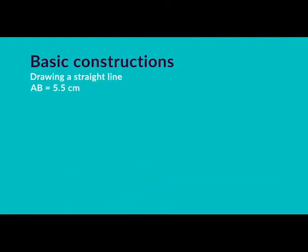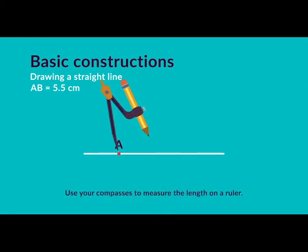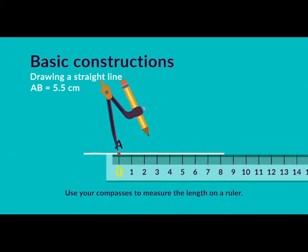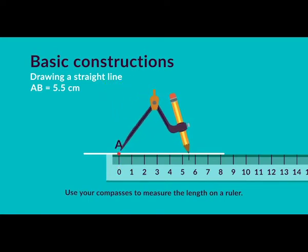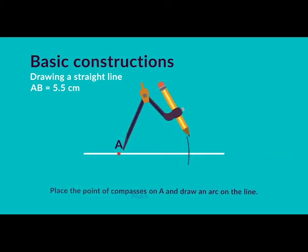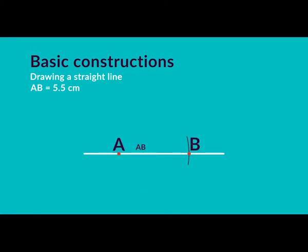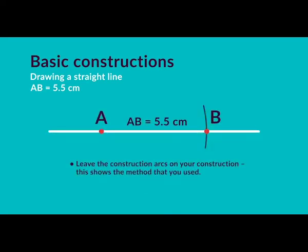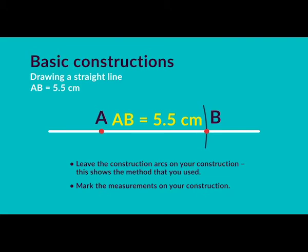Drawing a straight line of exactly 5.5cm. Draw a line of any length and mark your starting point, naming it A. Open the compasses to measure 5.5cm by placing the pointer on the zero mark of the ruler and the pencil point on the 5.5cm mark. Place the compass pointer on point A and draw an arc on the line. Mark the intersection point B. AB is the required line segment of 5.5cm. Be sure to leave the construction arcs and mark the measurements on your construction.